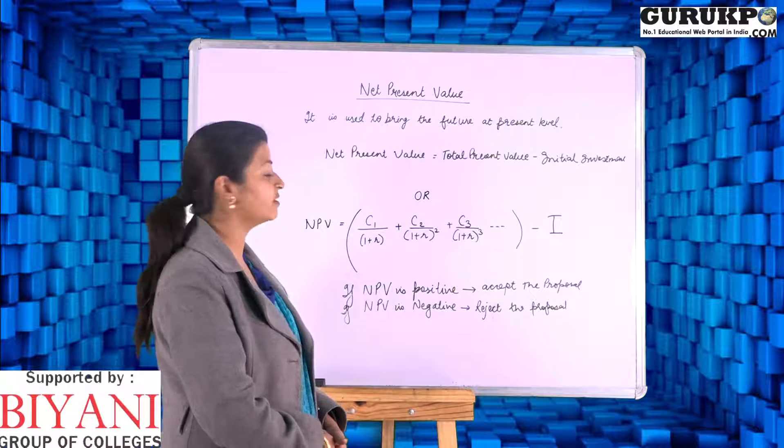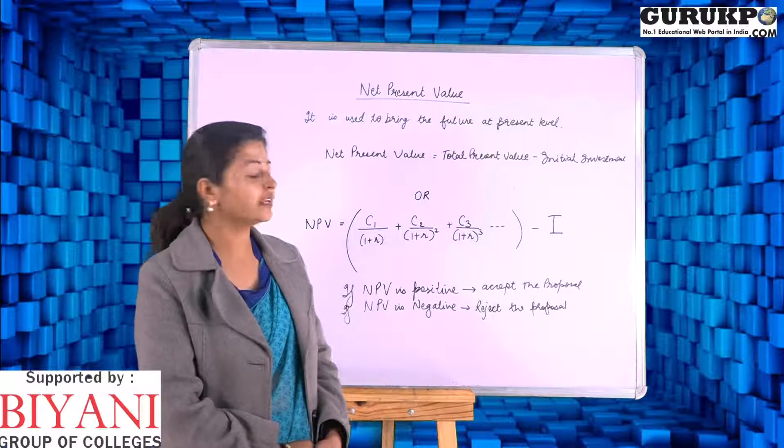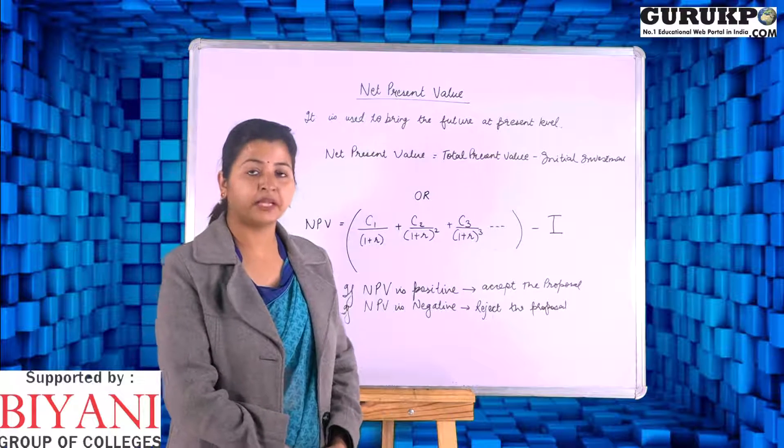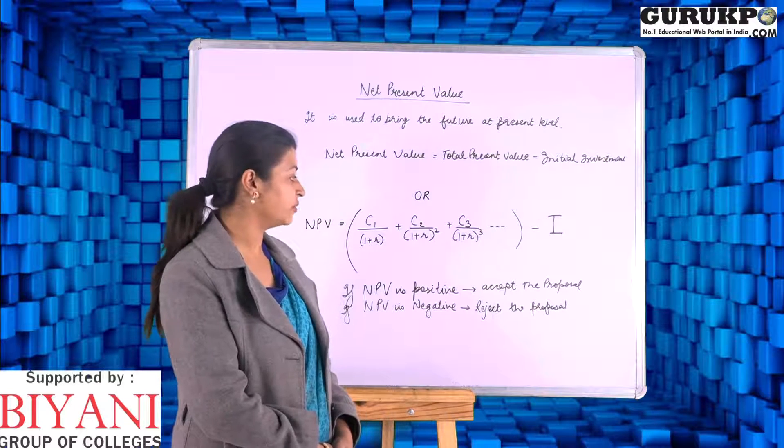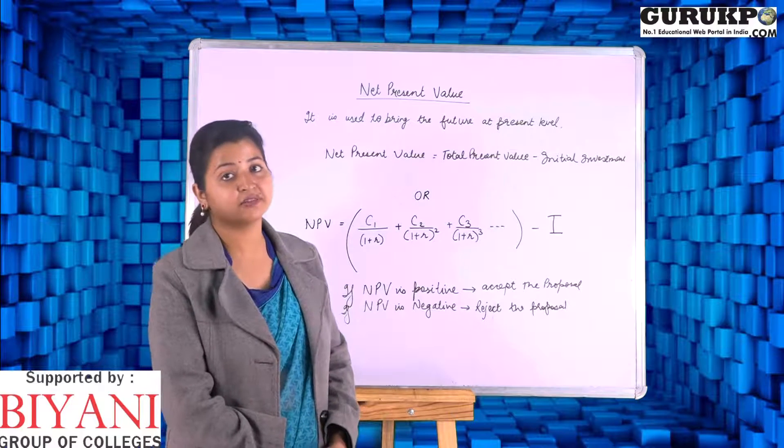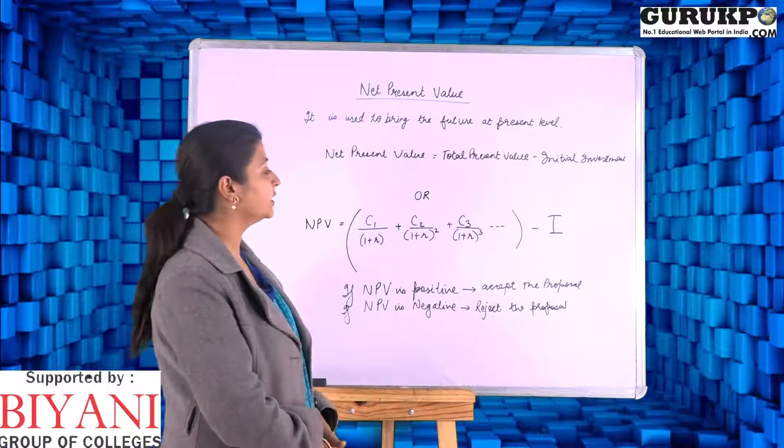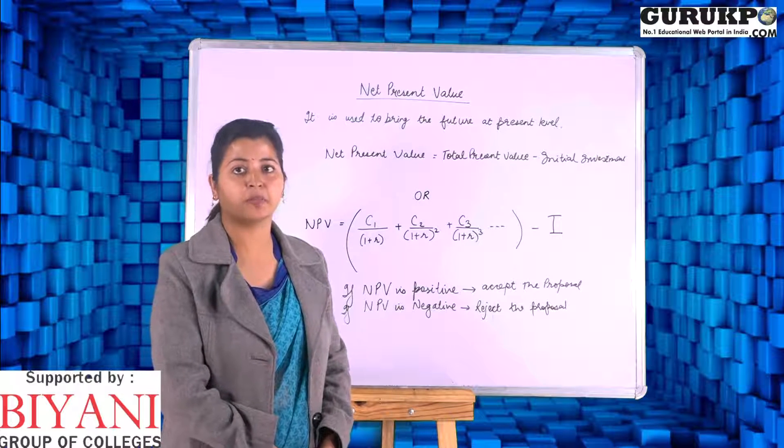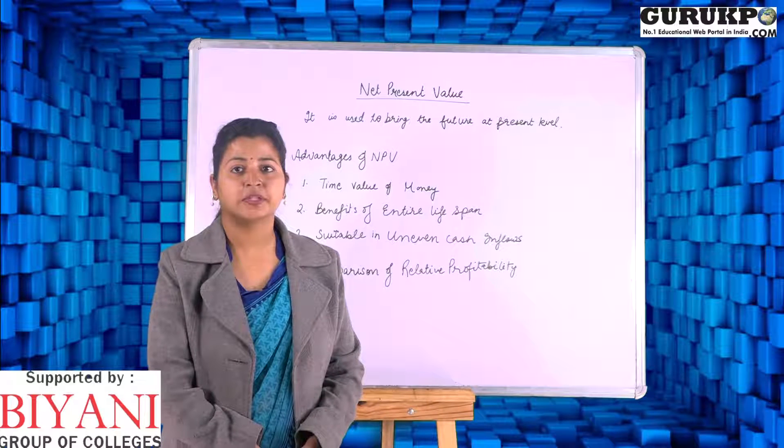If our NPV is positive, we can accept the proposal. If it is negative, we should reject the proposal. In case of mutually exclusive projects, we should take the project which has the highest NPV as top priority.